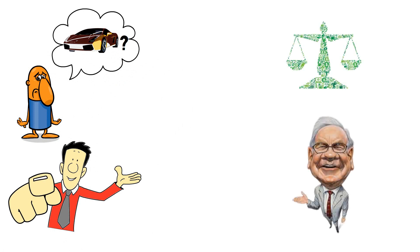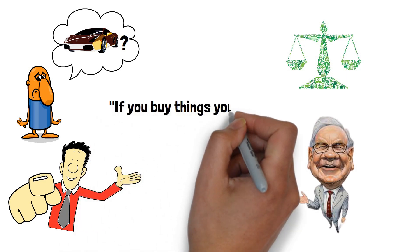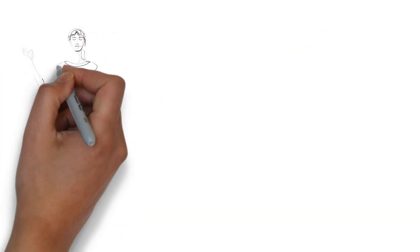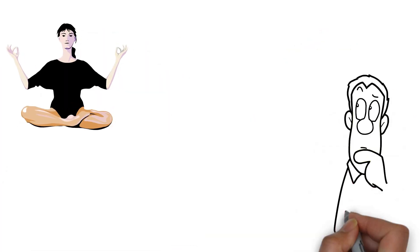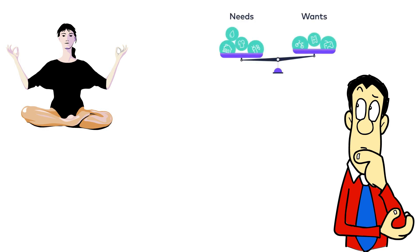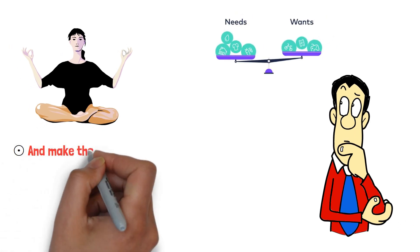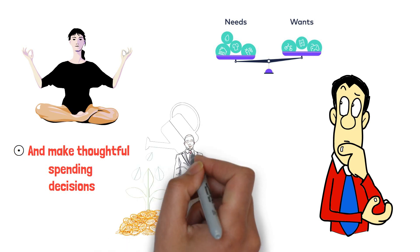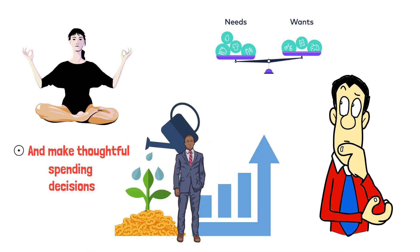As billionaire investor Warren Buffett says, if you buy things you don't need, soon you will have to sell things you need. So, practice the close your eyes rule. Take a moment to differentiate between your needs and wants and make thoughtful spending decisions. This simple practice can make a world of difference in your financial well-being.